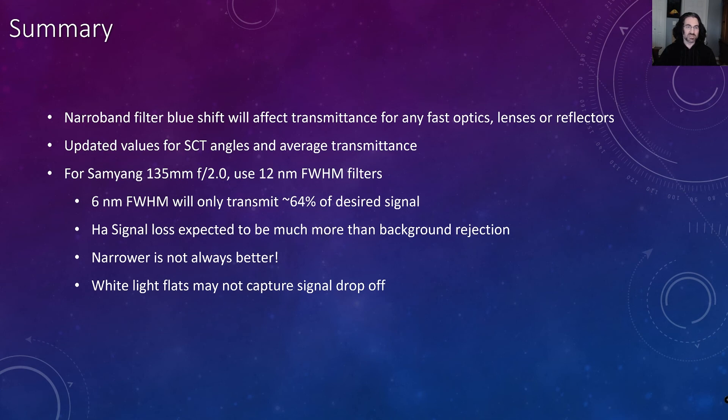All right, so what can we say from this? Narrow band filter blue shift will affect the transmittance for any fast optics, whether it's lenses or reflectors with a central obstruction. I updated the values for the Schmidt-Cassegrain telescope angles and average transmittance using the new index of refraction estimations and the adjusted code.